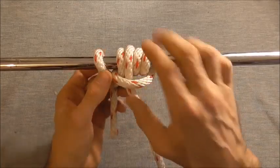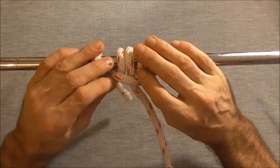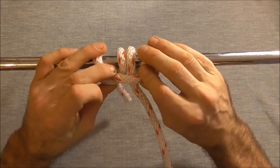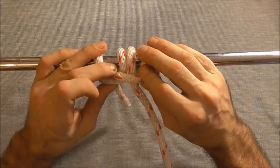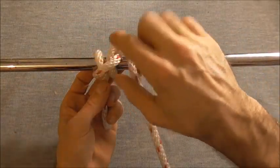So if we look at this section here, just in here, that is a lark's head or cow hitch, and if we look at this section here, just this bit here, that's just a clove hitch.